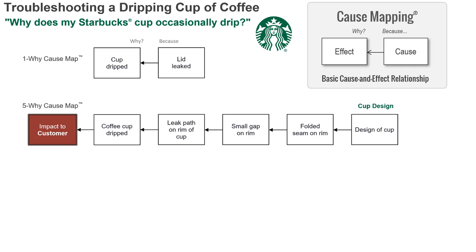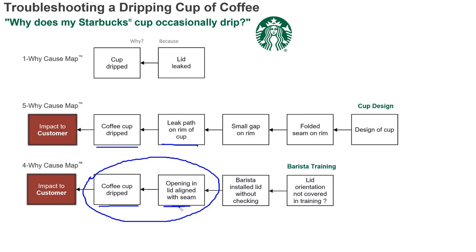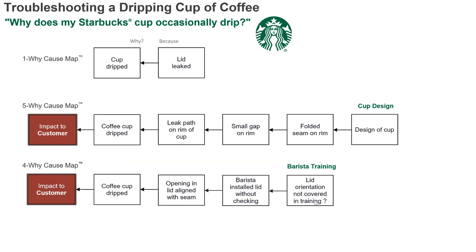Maybe someone from the original cup evaluation says, 'I tried to tell you it was cup design.' But there's more to this. If you talk with someone else, they might say the reason it drips is because the opening on the lid is aligned with the seam in the cup. That's another cause-and-effect relationship. The barista installed it that way because it wasn't covered in their training. So it's just another set of cause-and-effect relationships — pretty simple.